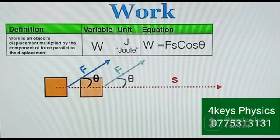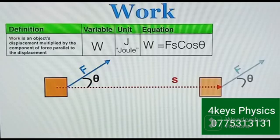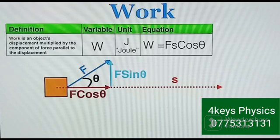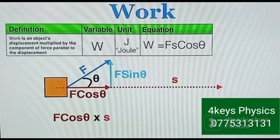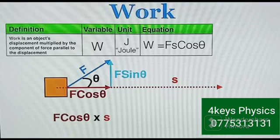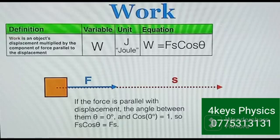That angle is theta. If you drag the box along a distance s, we resolve for the horizontal and vertical components. We're interested in the horizontal component F·cosθ because it is the one parallel to the displacement s. This is where we get our formula for work done: F·cosθ, which is the force parallel to the displacement, times the displacement. Work done equals force times distance, so F·cosθ × s is exactly that formula.